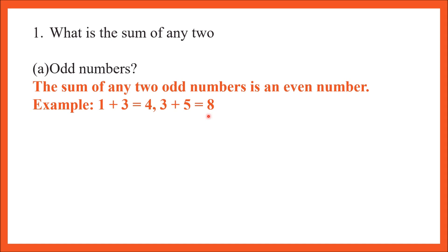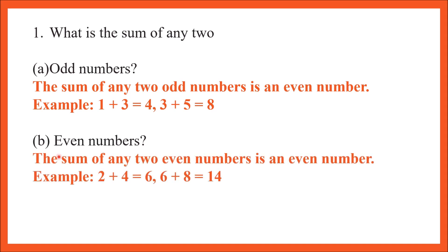Next part: what is the sum of any two even numbers? The sum of any two even numbers is also an even number. To verify, I took another example: 6 plus 8. These are two even numbers and their sum is also an even number. So the sum of any two even numbers is always even.